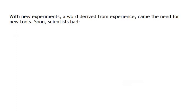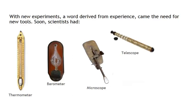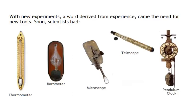Soon scientists had the thermometer for accurate measurement of temperature, phase changes, and enthalpy; the barometer, for the ability to predict the changing weather and plan accordingly; the microscope, for observation of the minute specimens and organisms that surround us; the telescope, for observation of the heavens and distant objects; and the pendulum clock, for accurate measurement of time and calculating travel.